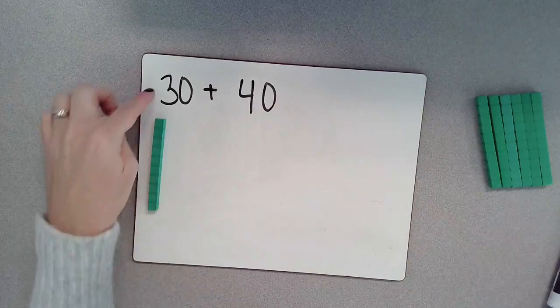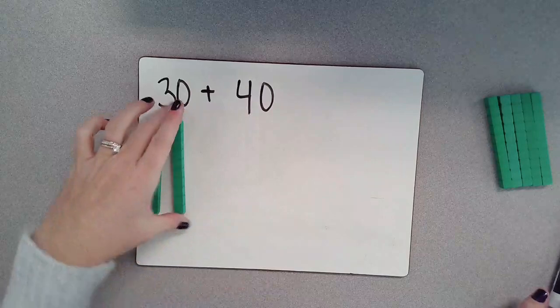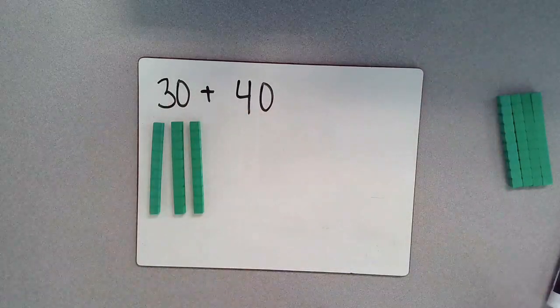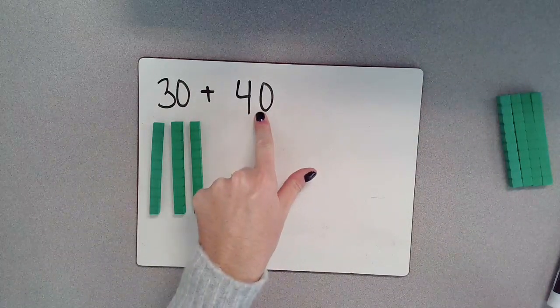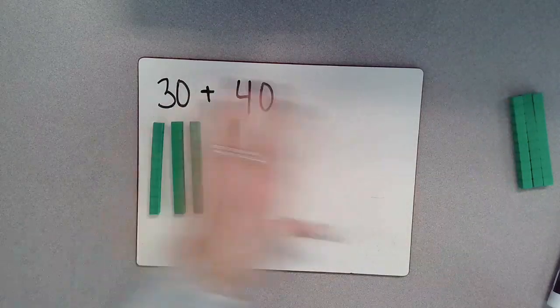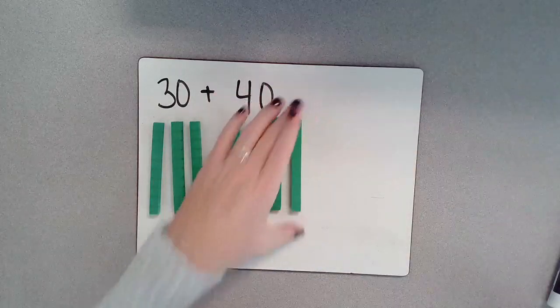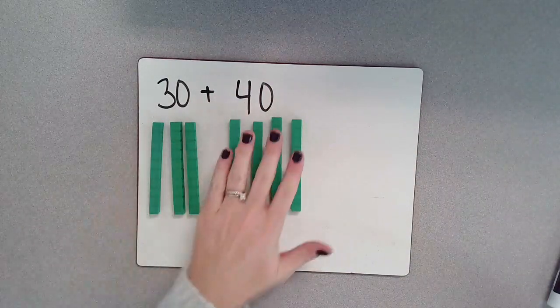So in order to find 30, I'm going to count up by my 10. So I have 10, 20, 30. In order to find 40, I'm going to count up by my 10s again to 40. So 10, 20, 30, 40. So now I have 30 and then I have 40 here,